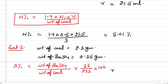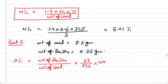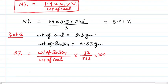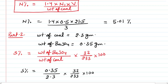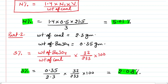Placing all values into the formula: % S = (0.35 / 2.3) × (32 / 233) × 100. After complete calculation, we get 2.08%. So that is the second answer. To summarize: the percentage of nitrogen is 5.01% and the percentage of sulfur is 2.08%. The sulfur percentage is calculated simply, while for nitrogen percentage we needed two steps.